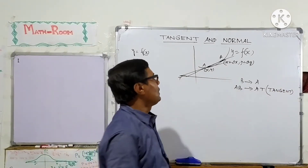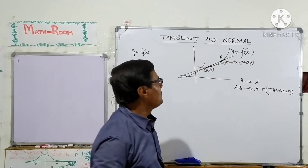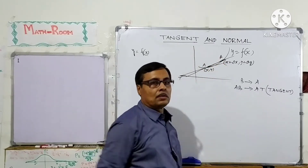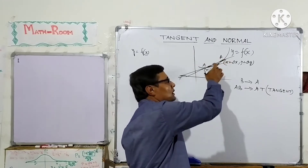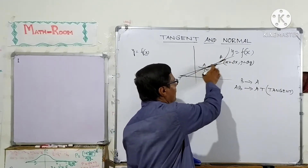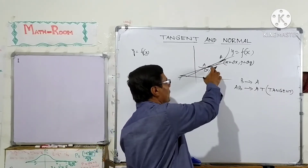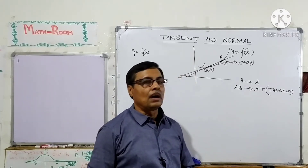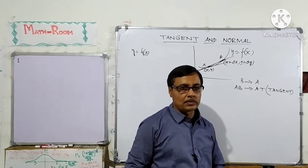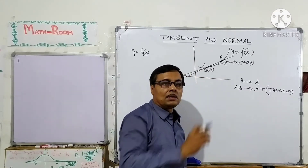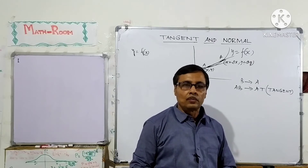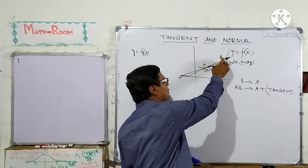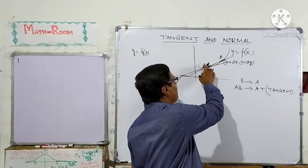Generally, a line meets the curve at two or more points. Here, when the two points A and B coincide with each other, the secant line is converted into the tangent line at A. This tangent touches the curve at only one point A and does not intersect the curve in two or more points.